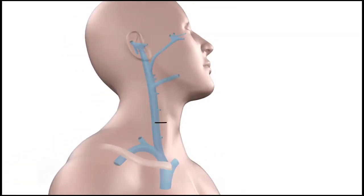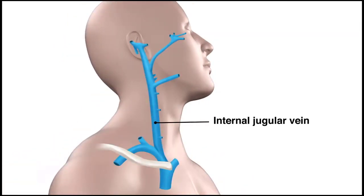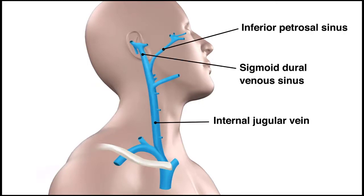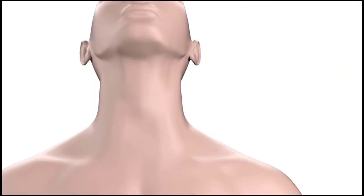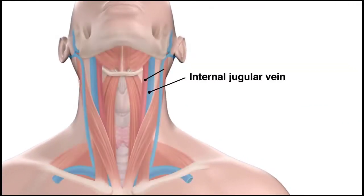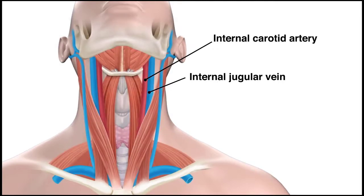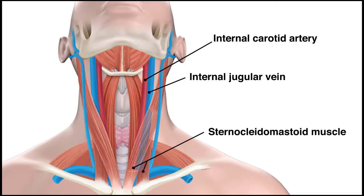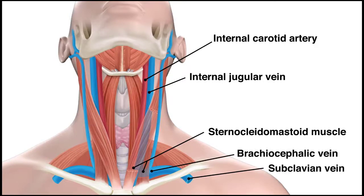The internal jugular vein is formed by the convergence of the inferior petrosal sinus and the sigmoid durovenous sinus, which are in or just distal to the jugular foramen. The internal jugular vein descends alongside the internal carotid artery in the carotid sheath and continues posteriorly to the space between the two heads of the sternocleidomastoid muscle. Then the vein merges with the subclavian vein to form the brachiocephalic vein, which drains blood from the brain, face, and neck.